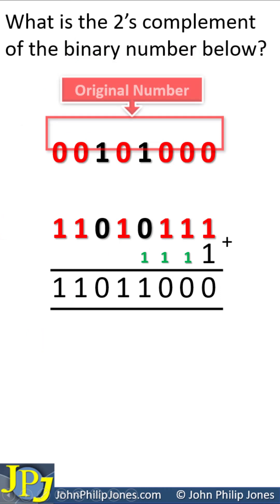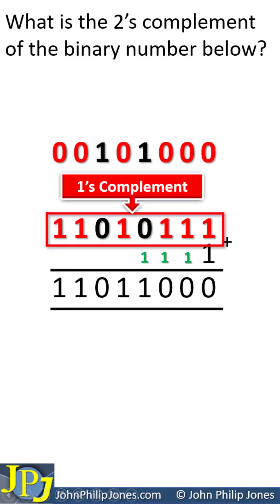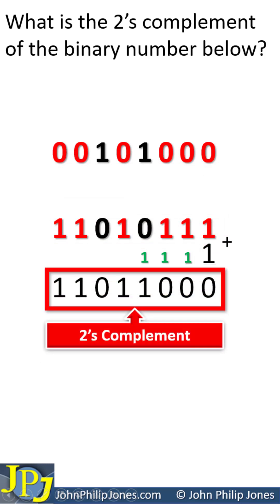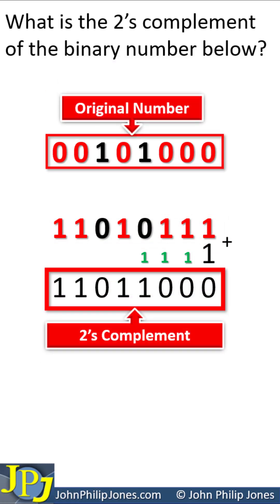The steps are as follows. This is the original number. This is the 1's complement to which we add 1, and then we end up with the 2's complement of what is the original number here.